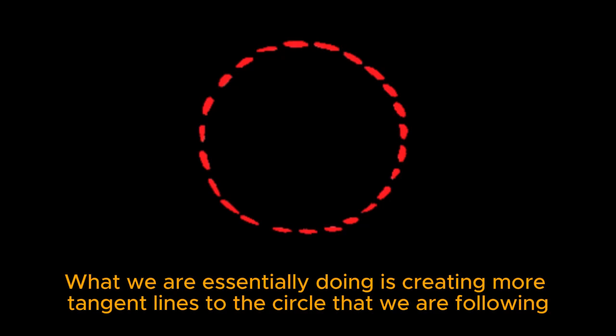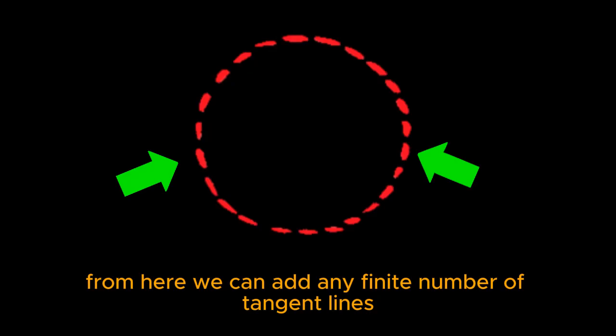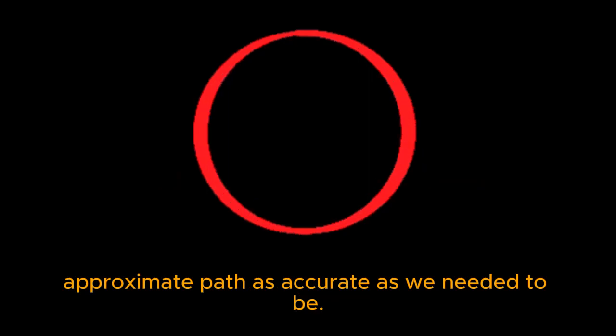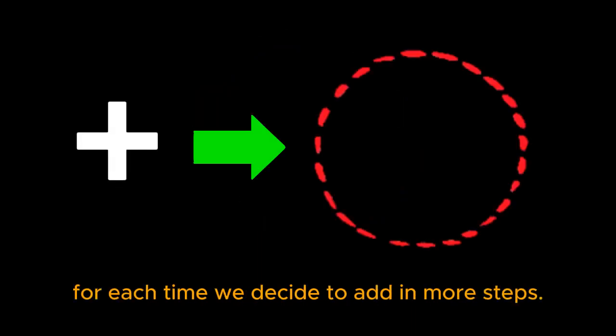What we are essentially doing is creating more tangent lines to the circle that we are following. From here, we can add any finite number of tangent lines to make this approximate path as accurate as we need it to be. The only problem with this is that it requires far more work for each time we decide to add in more steps.